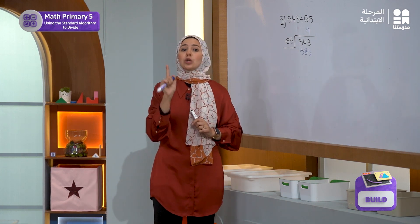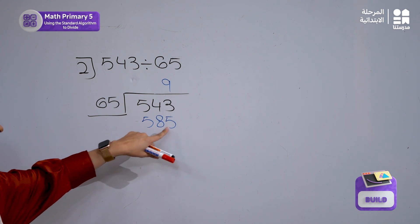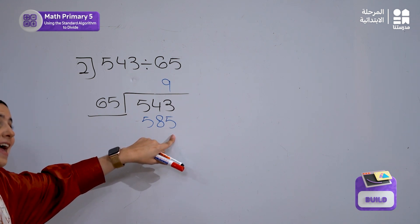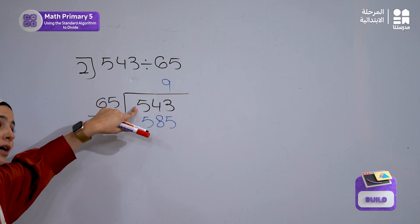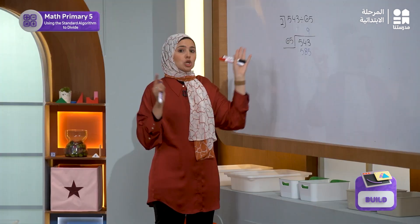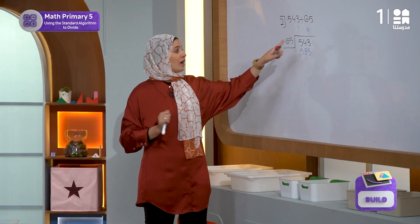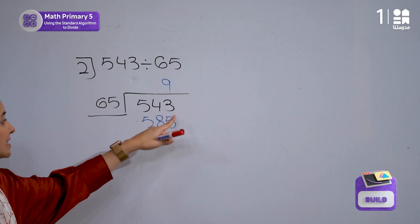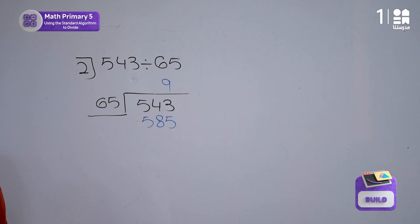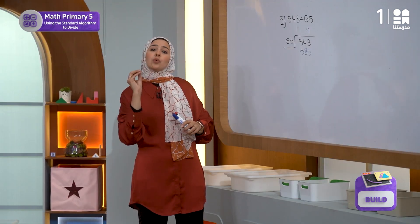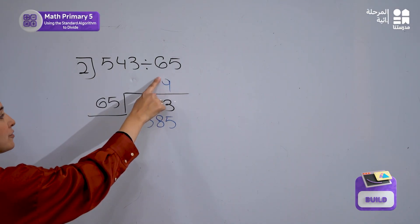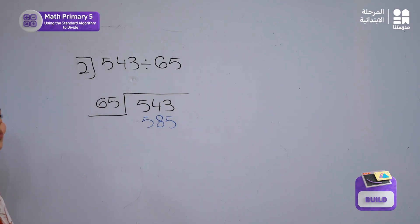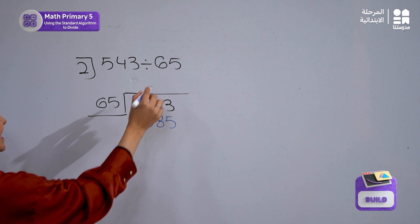I'm sure many of you will notice that 585 is greater than the number we are dividing, which is 543. So in this case, we are going to try a smaller number instead of the 9.